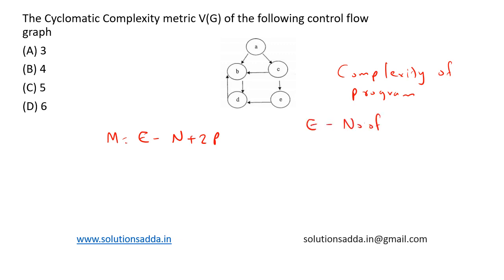...number of edges in the graph, N represents the nodes in the graph, and P represents the number of connected components.